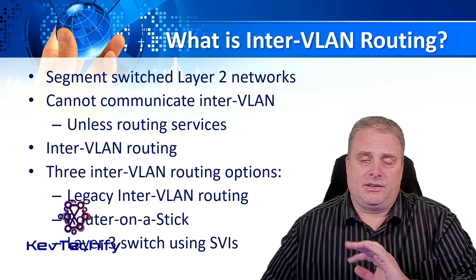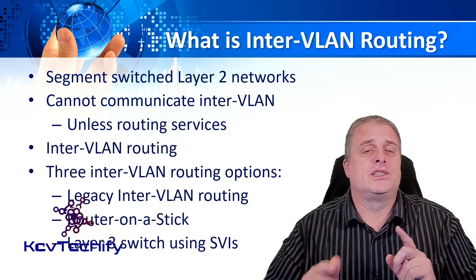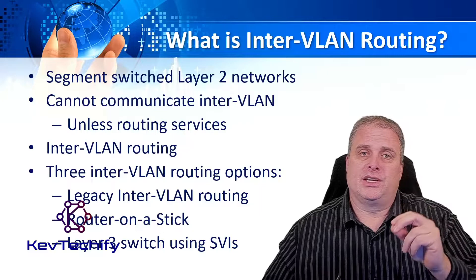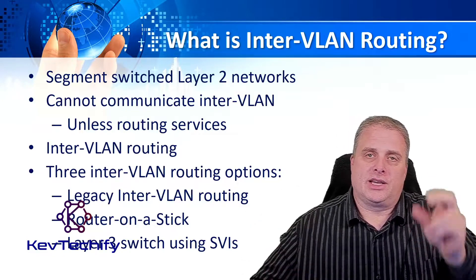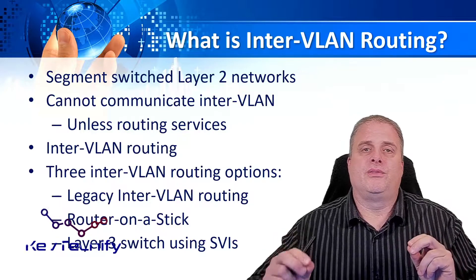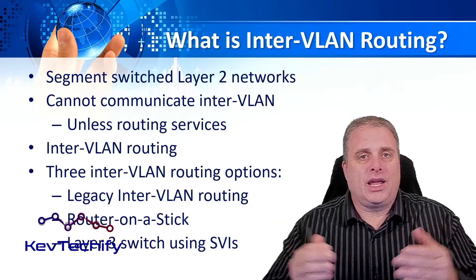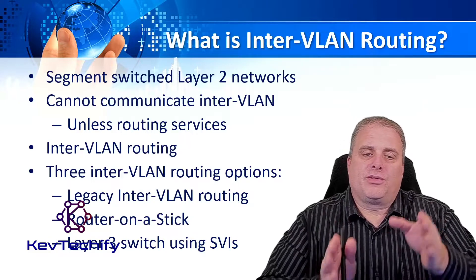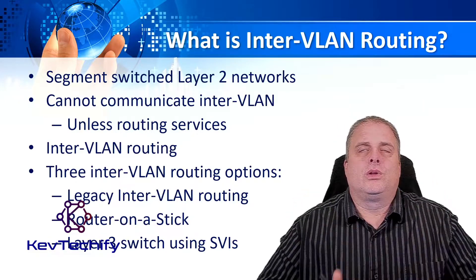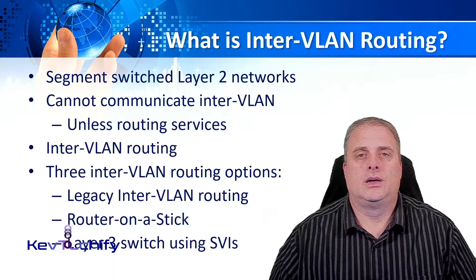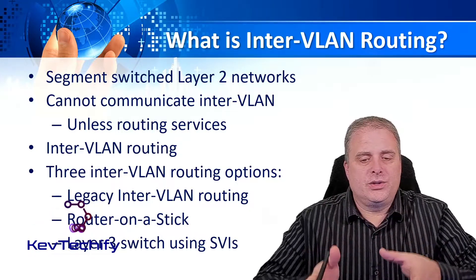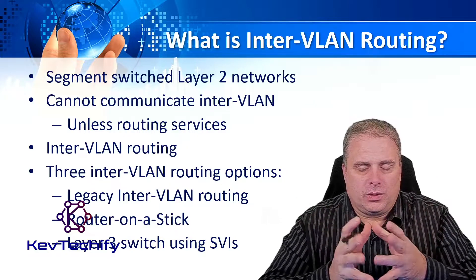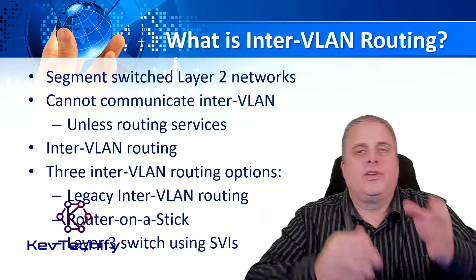This is done for security reasons, for optimization reasons to separate your traffic out — a number of different reasons why we have VLANs. The issue with VLANs is they do not communicate with each other. If you have two devices in VLAN 10, those can communicate with each other. But if you have a device in VLAN 10 and another in VLAN 20, those will not communicate if you just have a switch. We have to bring in a Layer 3 device in order to do routing to get from one VLAN to another — that's inter-VLAN routing.